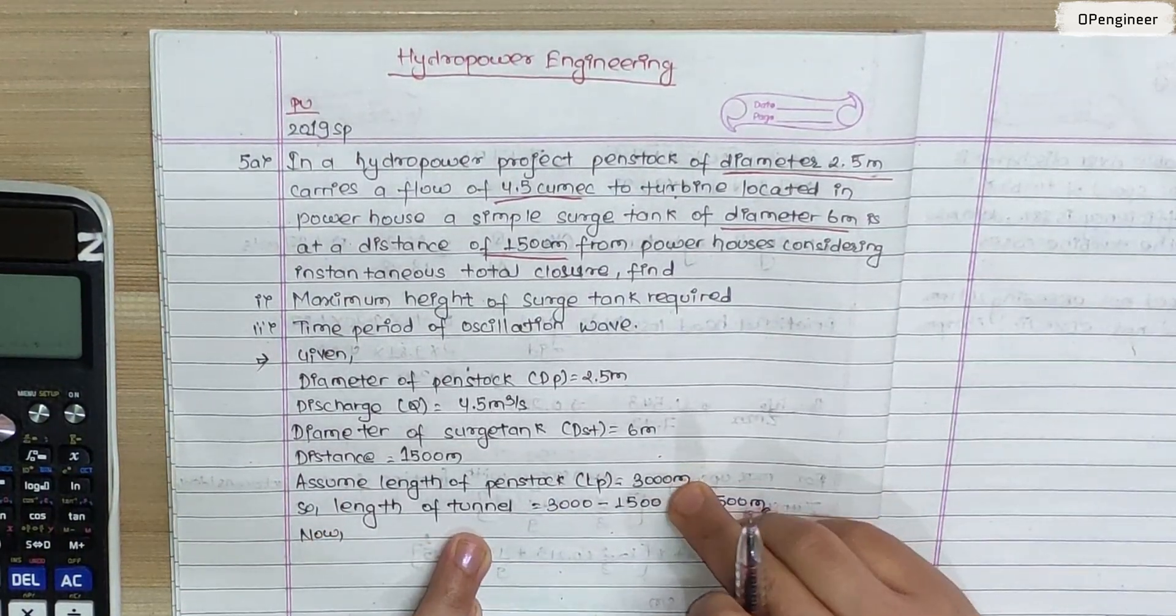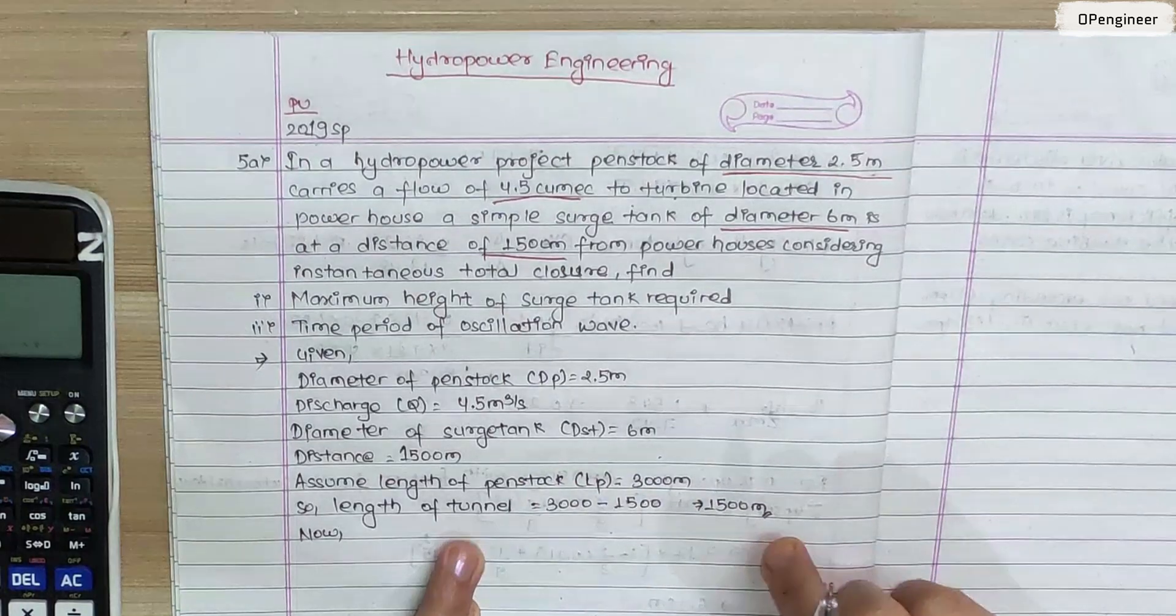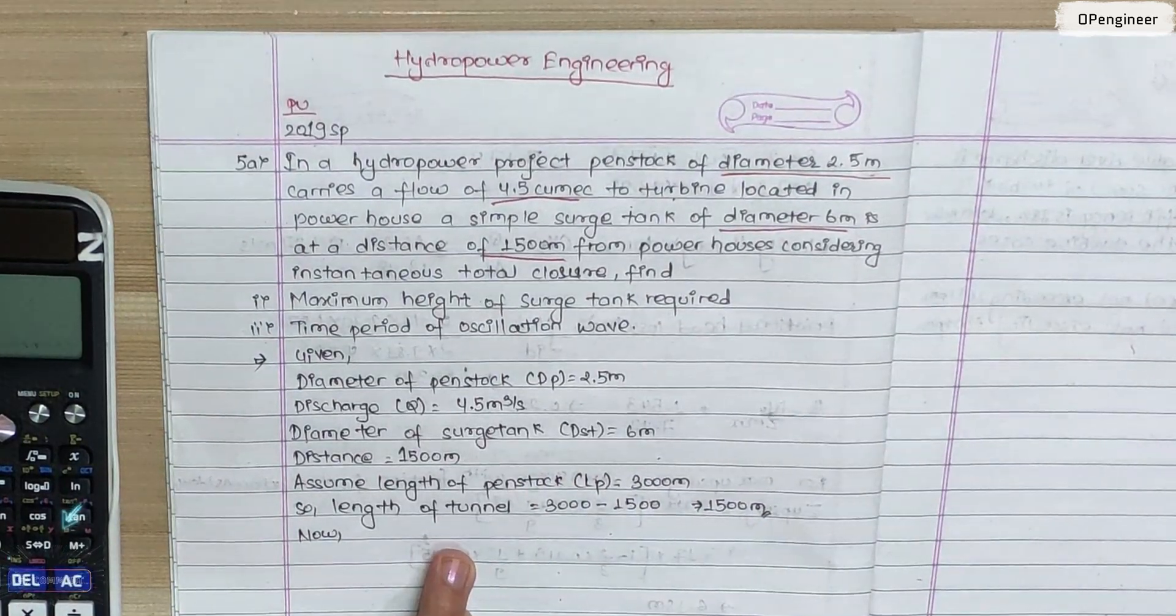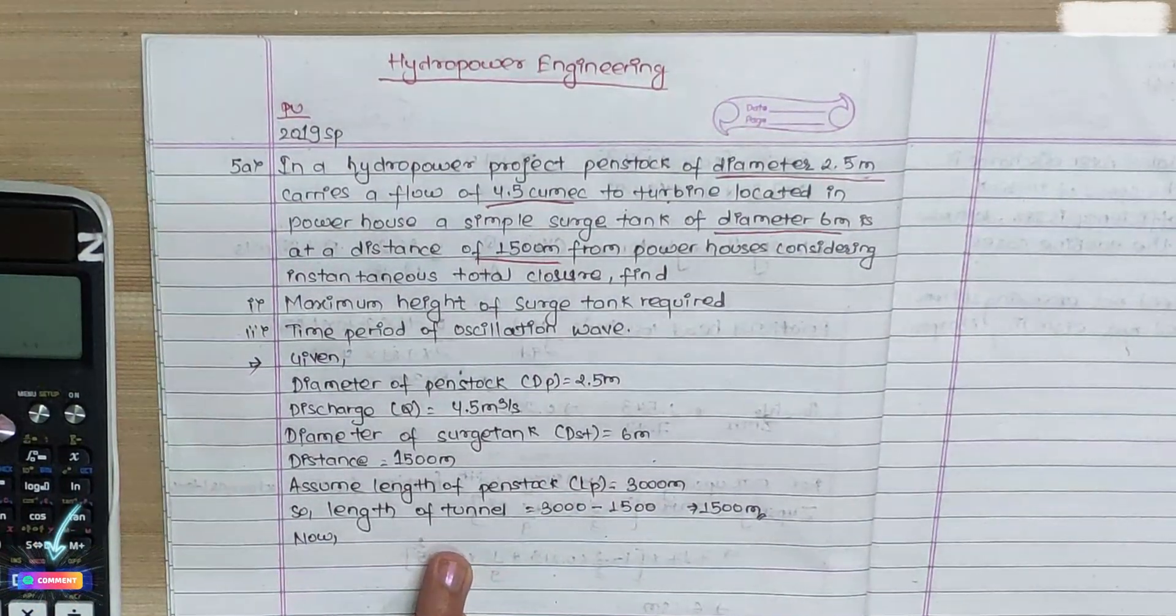So length of tunnel is 3000 minus 1500. Now we are going to talk about the cross-section area of penstock.